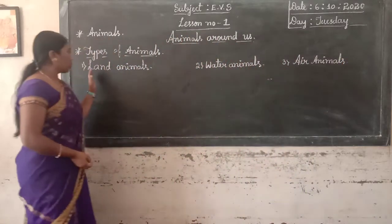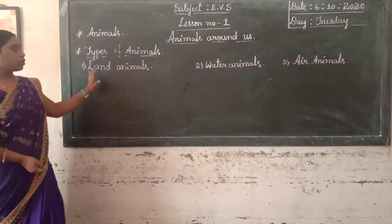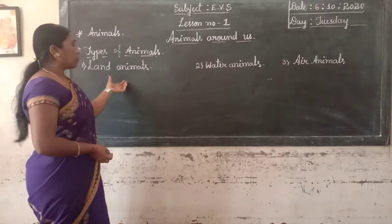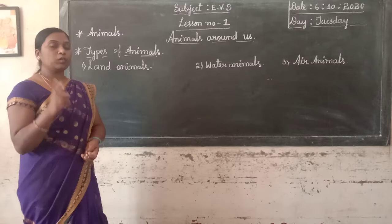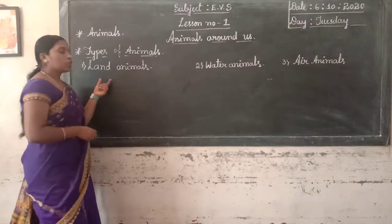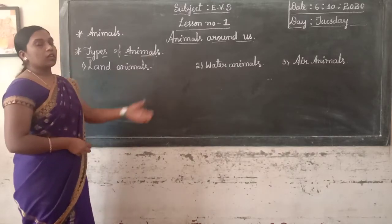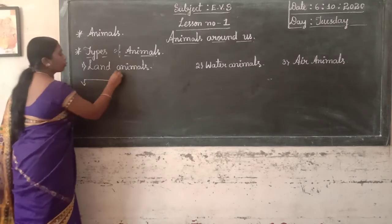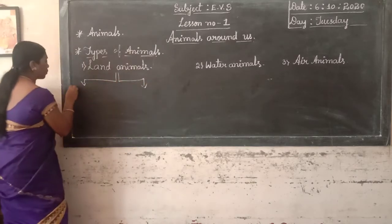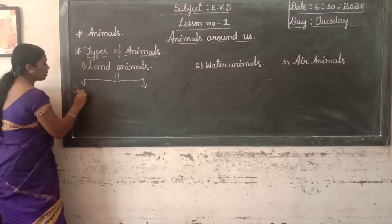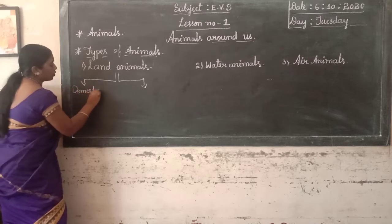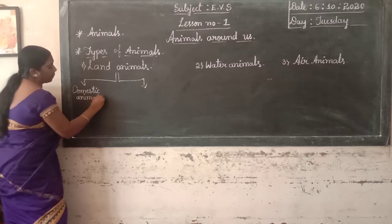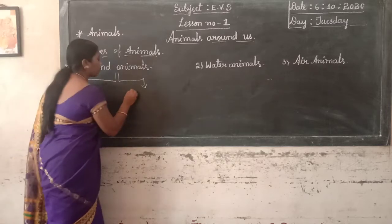First, let us learn about land animals. Some animals live on land. We divide land animals into two groups: domestic animals and wild animals.